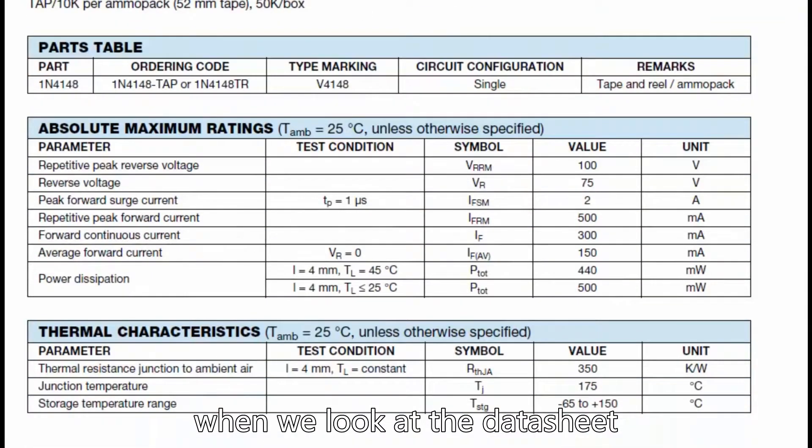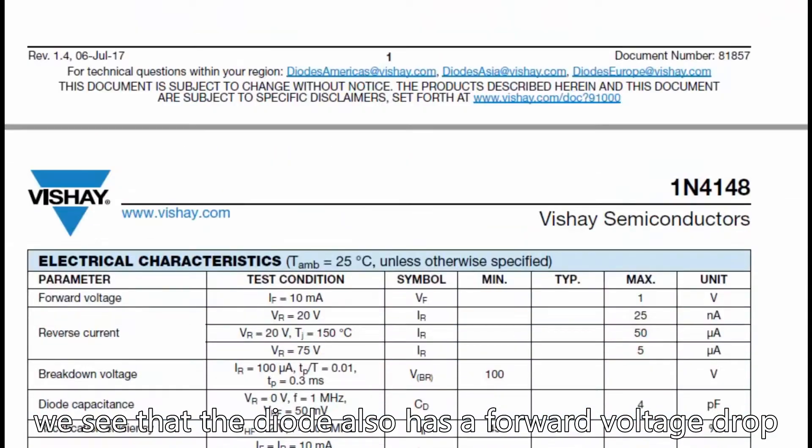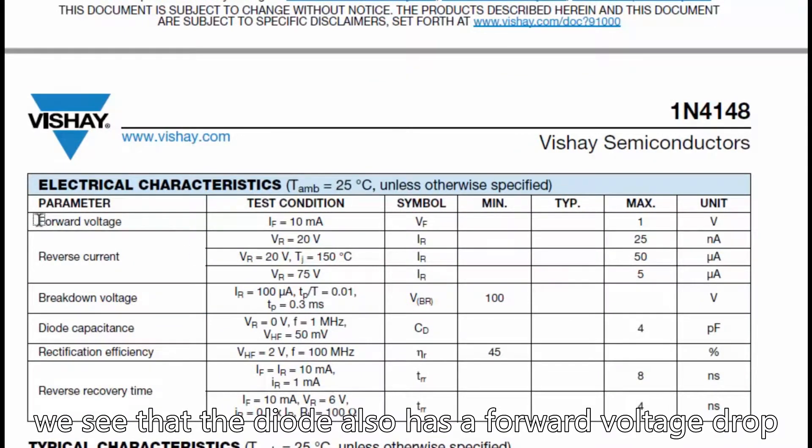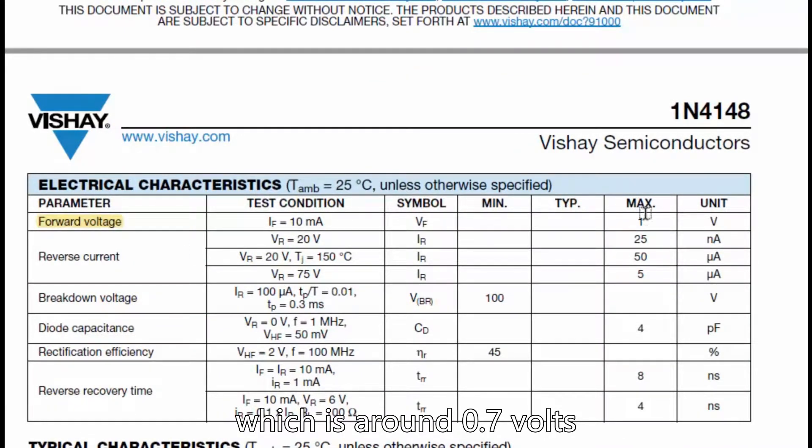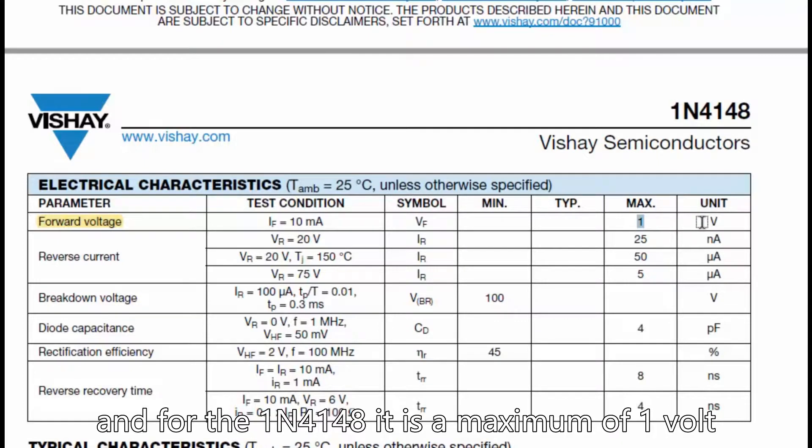When we look at the datasheet, we see that a diode also has a forward voltage drop which is around 0.7 volts. And for the 1N4148, it is a maximum of 1 volt.